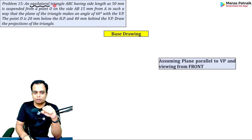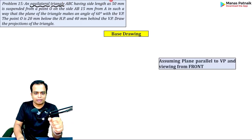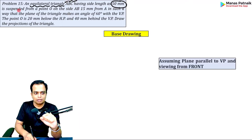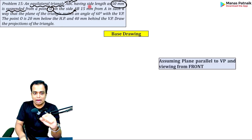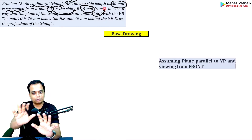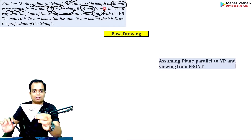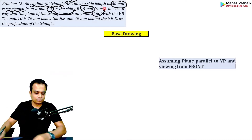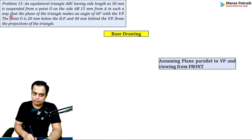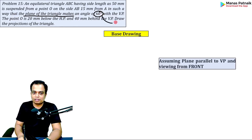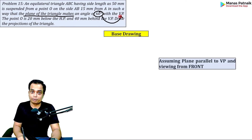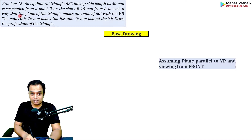We are dealing with an equilateral triangle where all sides are equal to 50 millimeters. The corners are A, B, and C. It is suspended from point O, which is on side AB at a distance of 15 mm from corner A. The plane of the triangle makes an angle of 60 degrees with the vertical plane.